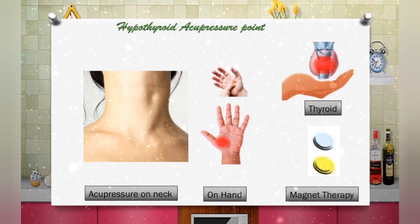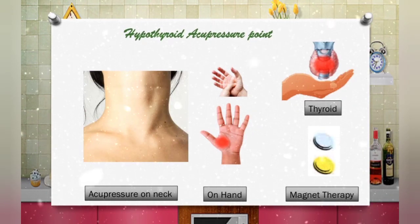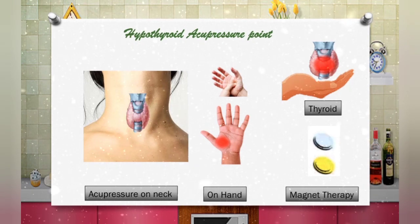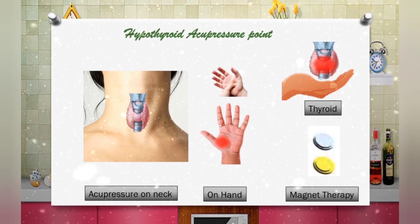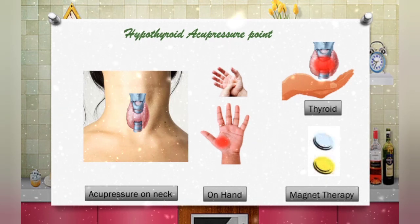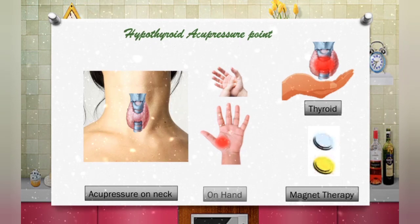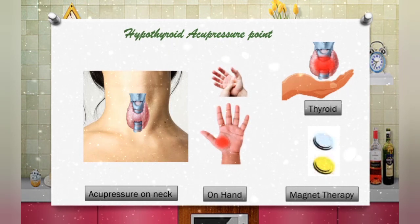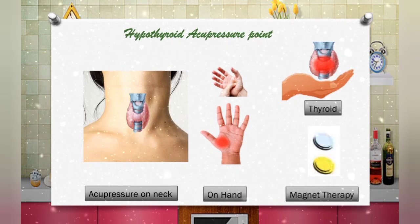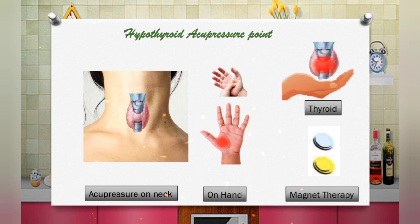Hi friends, today's topic is hypothyroid acupressure points. Basically, acupressure is a force that is applied to a particular point to divert energy to flow through a target organ or a part to support its healing. I'll be focusing on acupressure points on your neck, on your hand, and small magnetic therapy on the hand through which you can heal your thyroid organ.